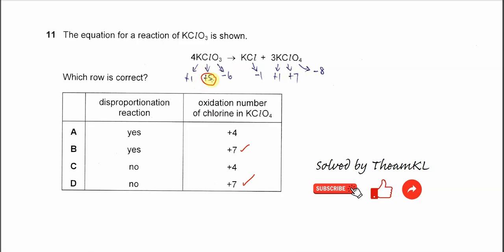After the reaction, it forms a chloride. Chloride is negative 1 because potassium is positive 1. In this KClO4, we already discussed just now, it's positive 7.